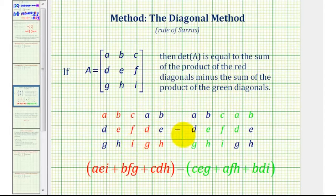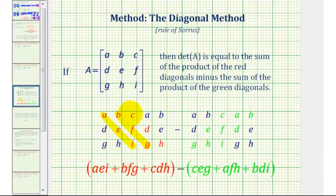So both of these three by five arrangements are the same. So the determinant will be equal to the sum of the product of these three diagonals minus the sum of the product of these three diagonals.